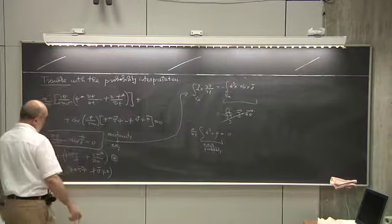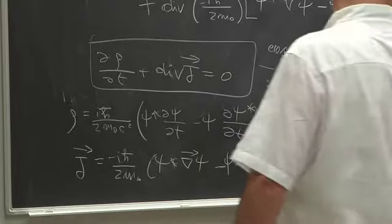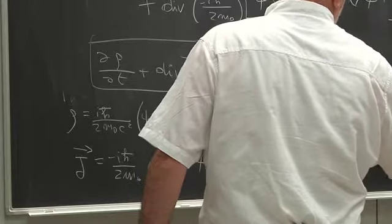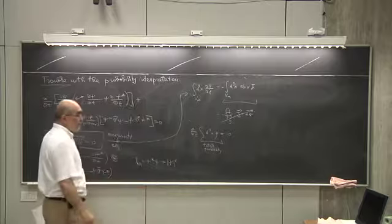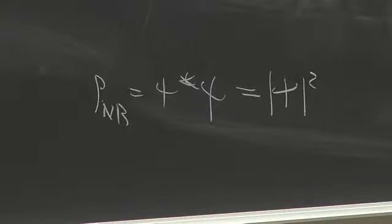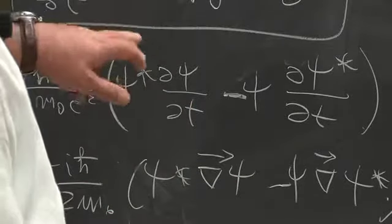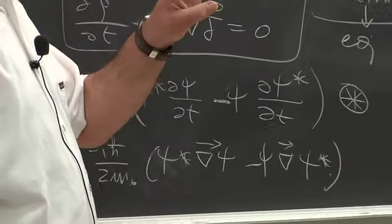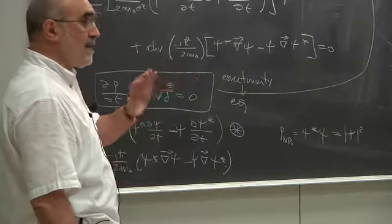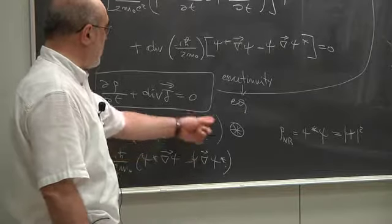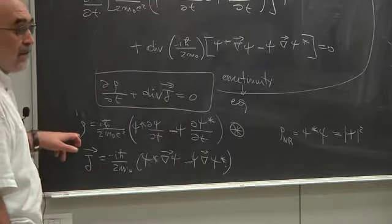The expression for rho is quite different from the non-relativistic case. The non-relativistic one was psi-star * psi, which had a clear meaning as a probability density because it's always positive. But here there is this minus sign in rho. Moreover, since the Klein-Gordon equation is second order in time, we must specify both psi and its time derivative as initial conditions — and those are arbitrary.